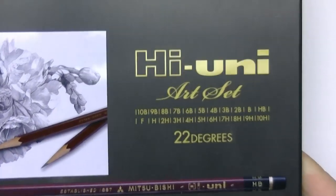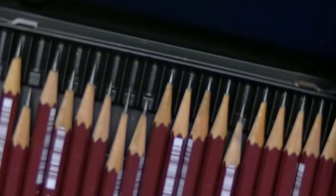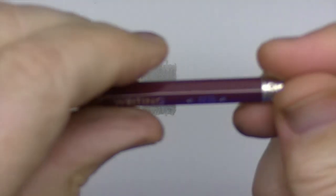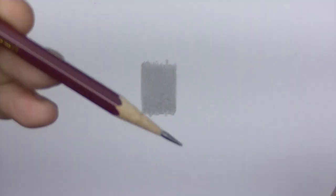There's our sample of the Kitabashi 9606. We're going to use this Mitsubishi Hi-Uni art set that I like to use for comparing the grades of pencils. These are high-quality Japanese pencils for drawing purposes, and we're going to start off with the HB pencil because this is listed as an HB, though I really think it draws darker than an HB.